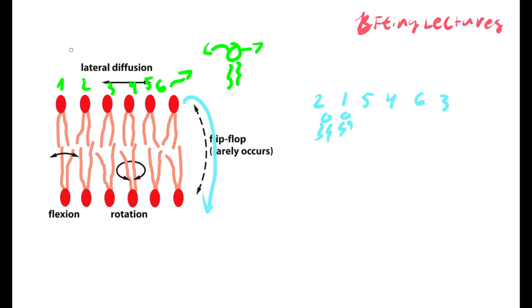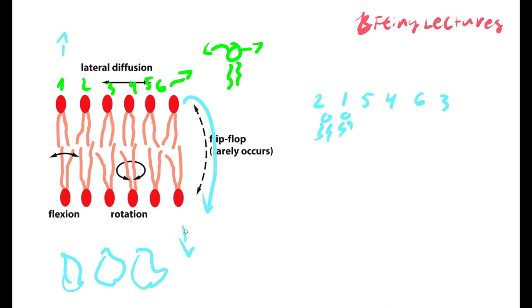Here we have the external environment and the internal environment. A phospholipid will almost never cross from the external environment to the internal environment on its own, because it costs too much energy. It won't happen spontaneously — you need an enzyme to do that.